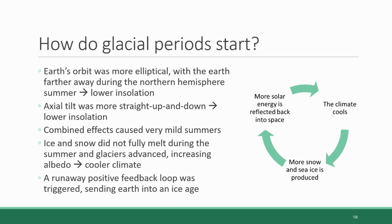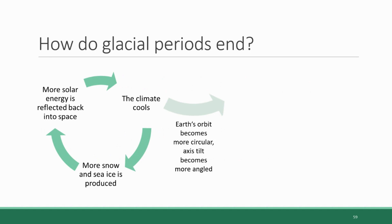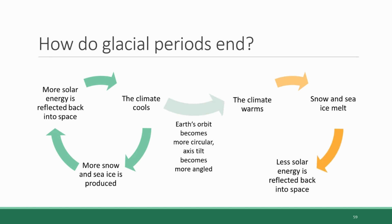Now we have a sense of how glacial periods can start, but how do these periods end — how do they transition into the interglacial periods? All this time the orbital characteristics of the Earth continue to change, and eventually the Earth's orbit becomes more circular and less elliptical, which increases the level of insolation during the summer. The tilt of the Earth's axis also takes on a more dramatic angle, which further increases summer insolation. The combination of these two things causes the climate to warm, which leads to the melting of ice, which decreases albedo, which further warms the climate — and so another runaway feedback loop is triggered until the Milankovitch cycle starts moving in the opposite direction.